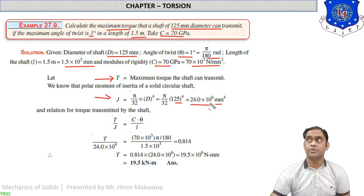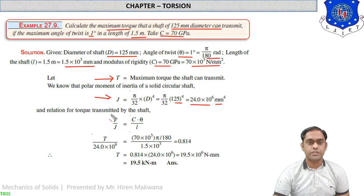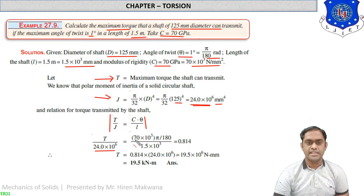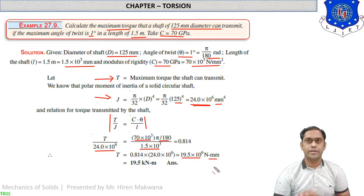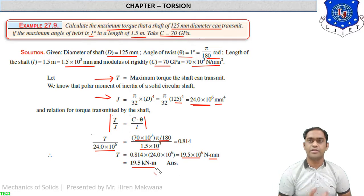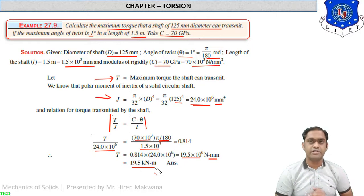Using the relation T/J = Gθ/L, where J = 24 × 10⁶, G = 70 × 10³, θ = π/180, and L = 1500, only T is unknown. Simplifying, T = 19.5 × 10⁶ N·mm = 19.5 kN·m. This is the torque capacity of the solid shaft when the angle of twist is the given constraint.